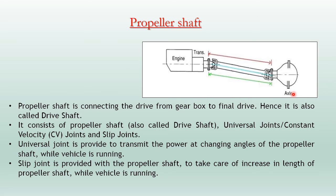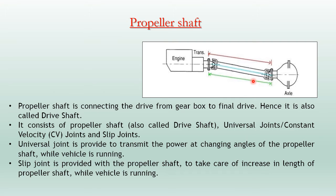For example, if you have a speed bump, your axle will move up and down. This angle will change, and the universal joint will compensate for that angle change. So during up and down movement of the axles, your power transmission will not change.